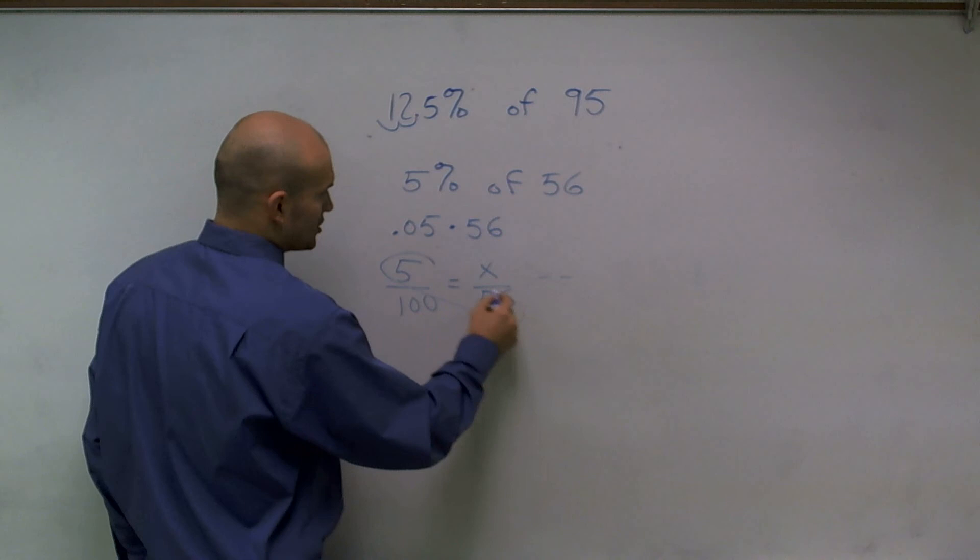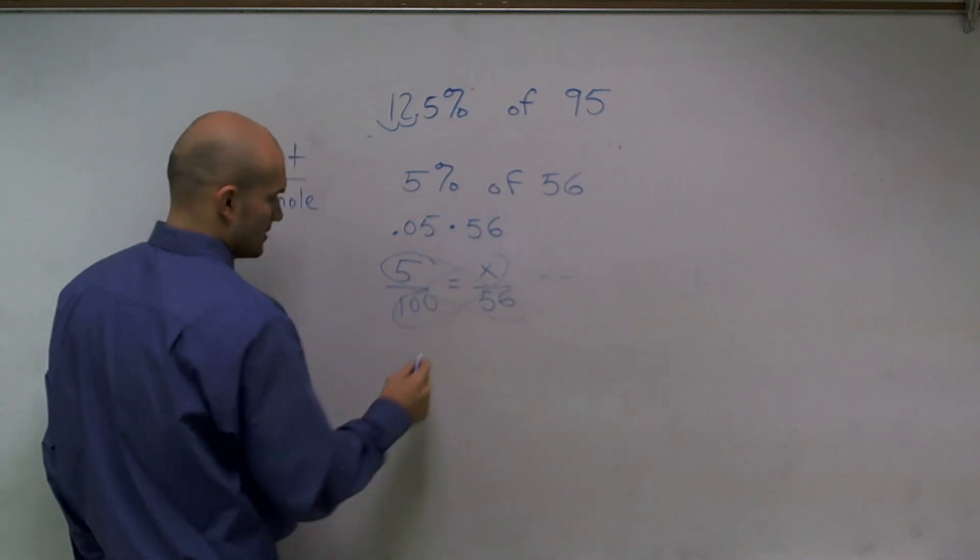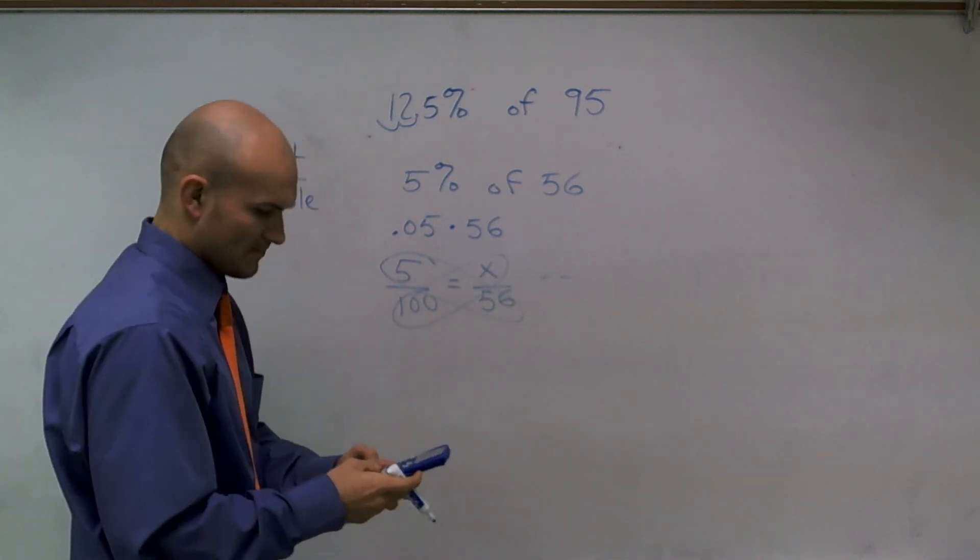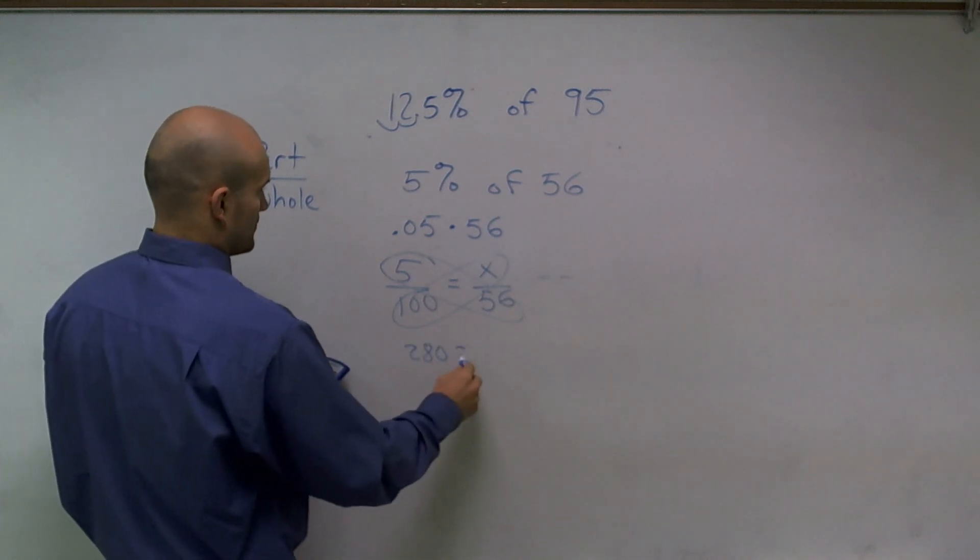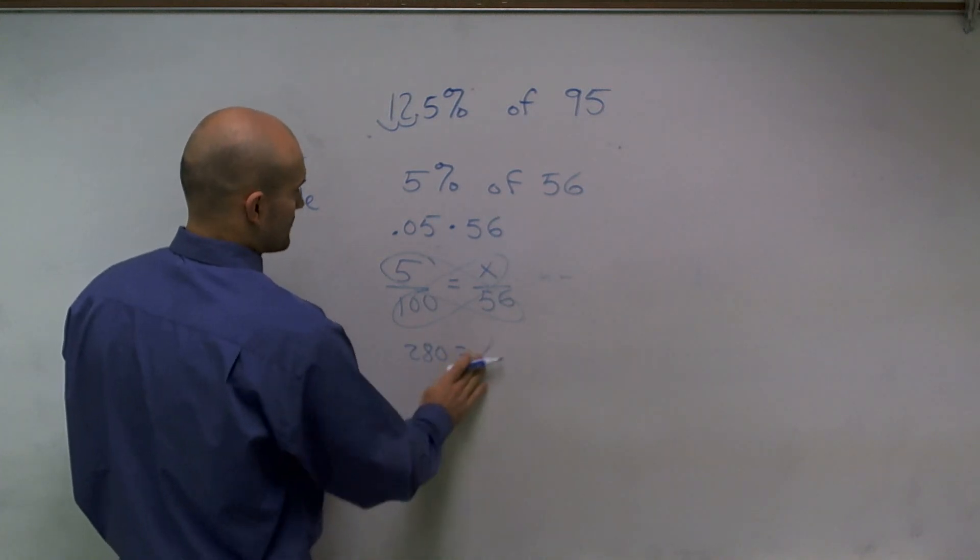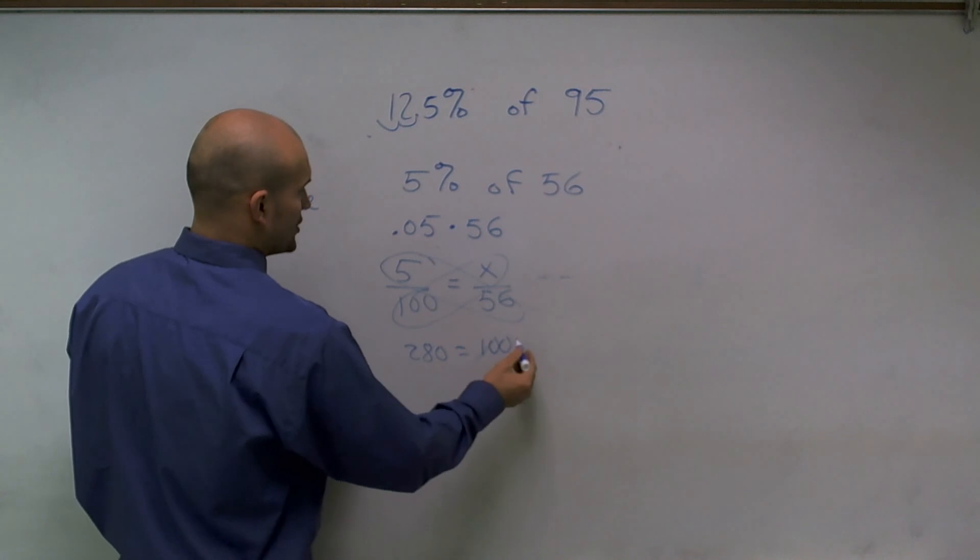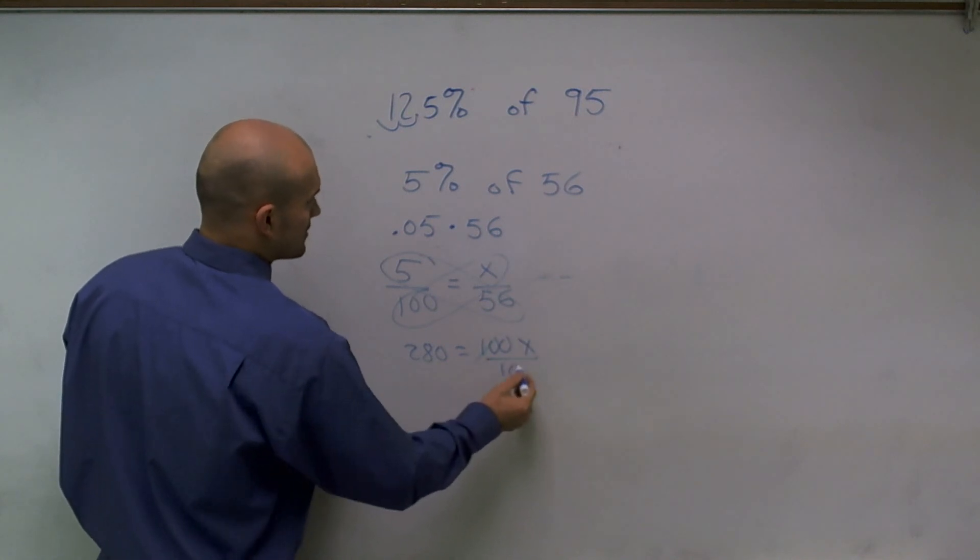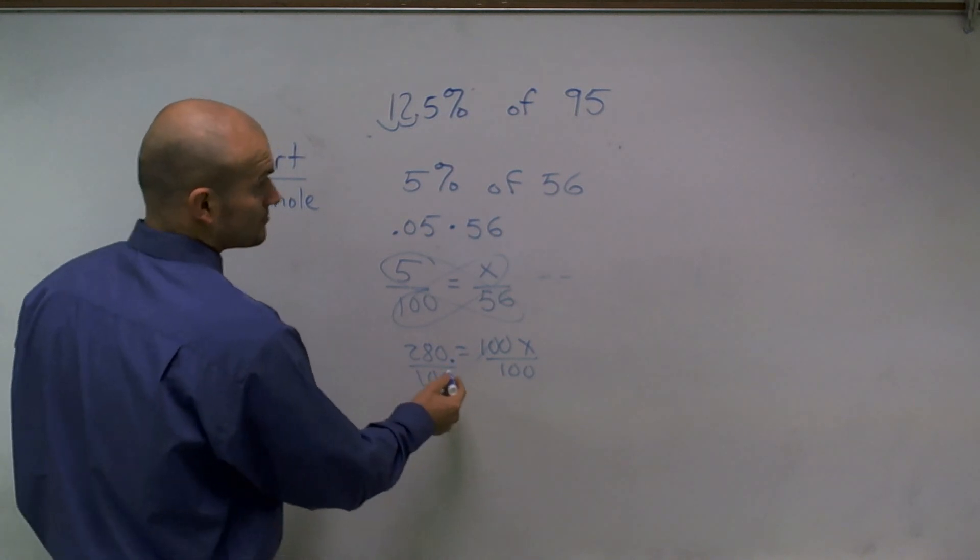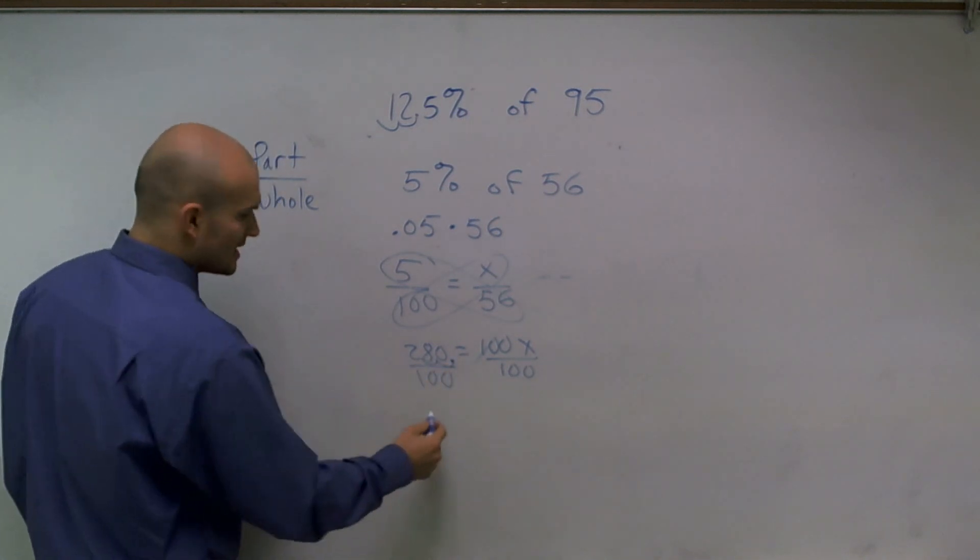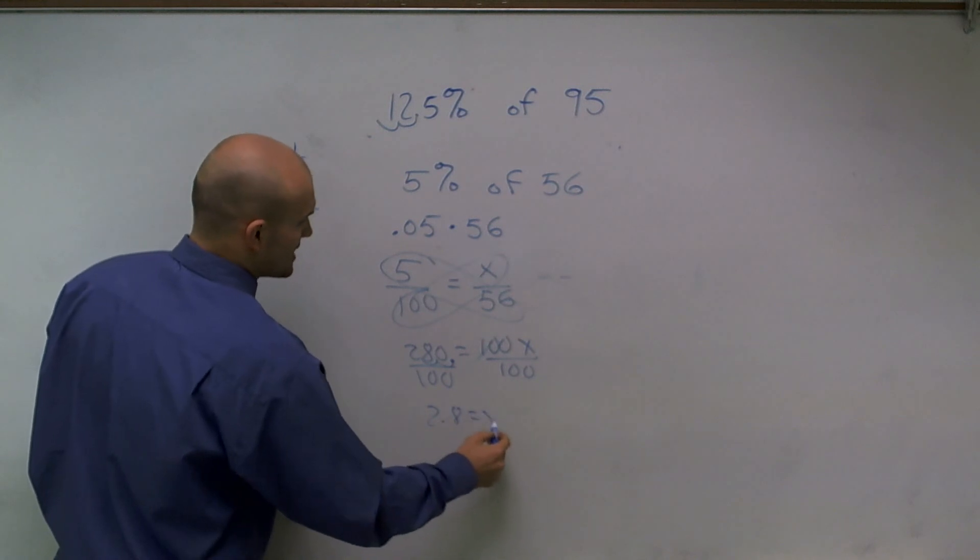So here you would cross multiply. So you'd have 5 times 56 equals 100 times x divided by 100. So my decimal point's right here. So I'd just move it over, and I'd get 2.8 equals x.